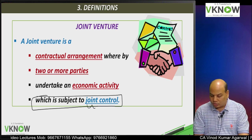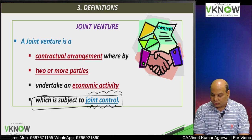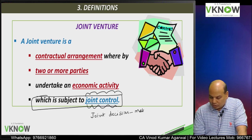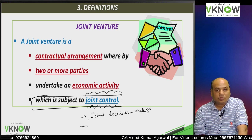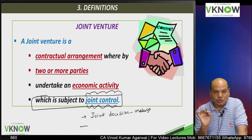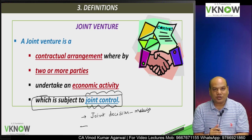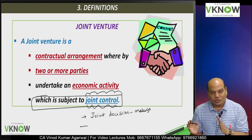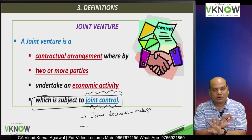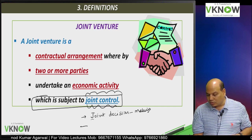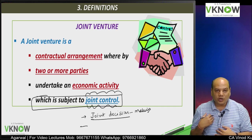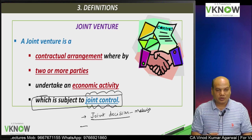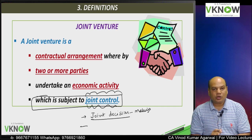An important aspect of joint venture is that it is subject to joint control — venturers have joint control, which means joint decision making. One person cannot take a unilateral decision. When there is a parent and subsidiary relationship, the parent can take a decision on behalf of the subsidiary — that is called control. When there is an investor and associate relationship, the investor can only have significant influence but does not have control. In a joint venture, the venturer will have to take decisions jointly. One venturer cannot unilaterally decide; he has to also take the approval of other co-venturers.